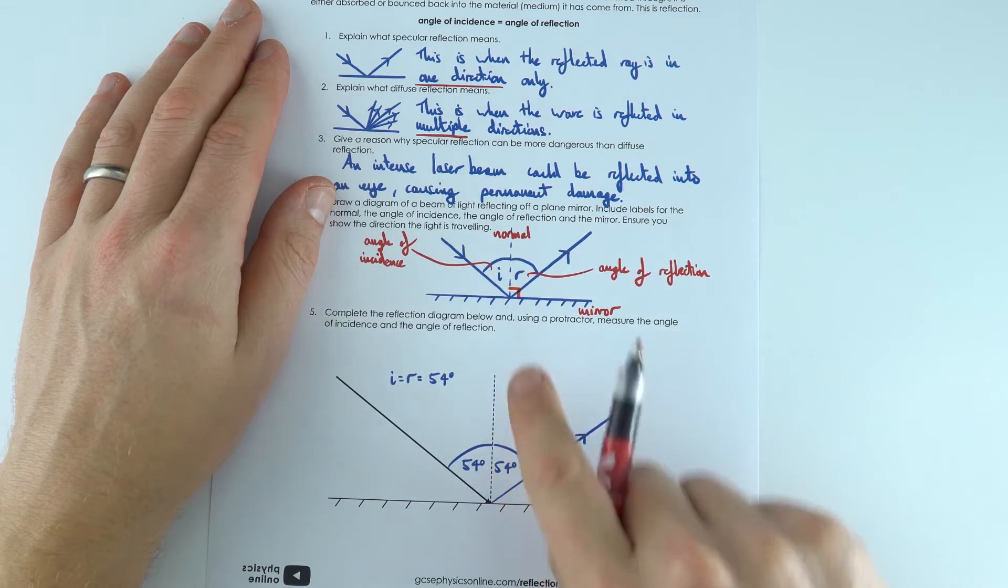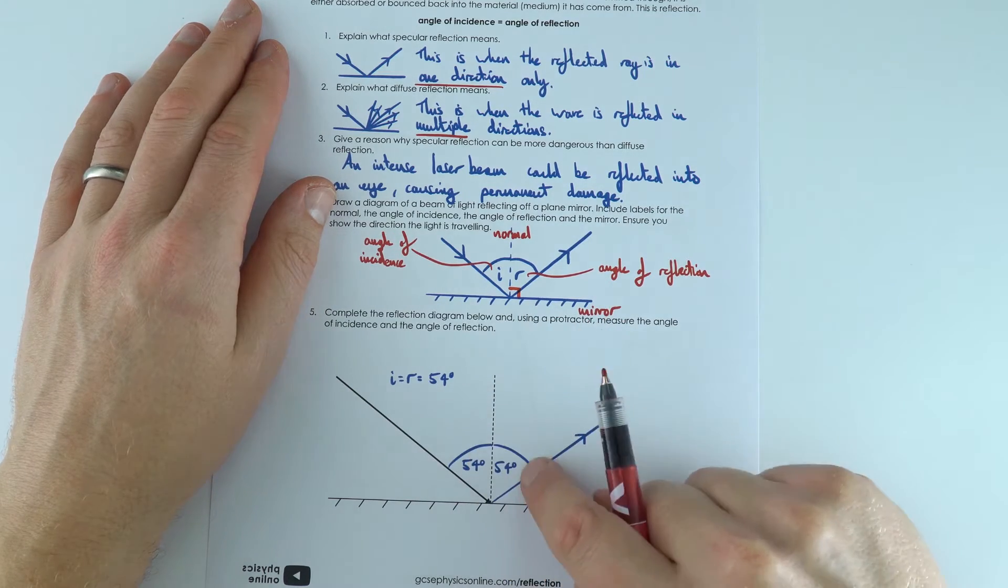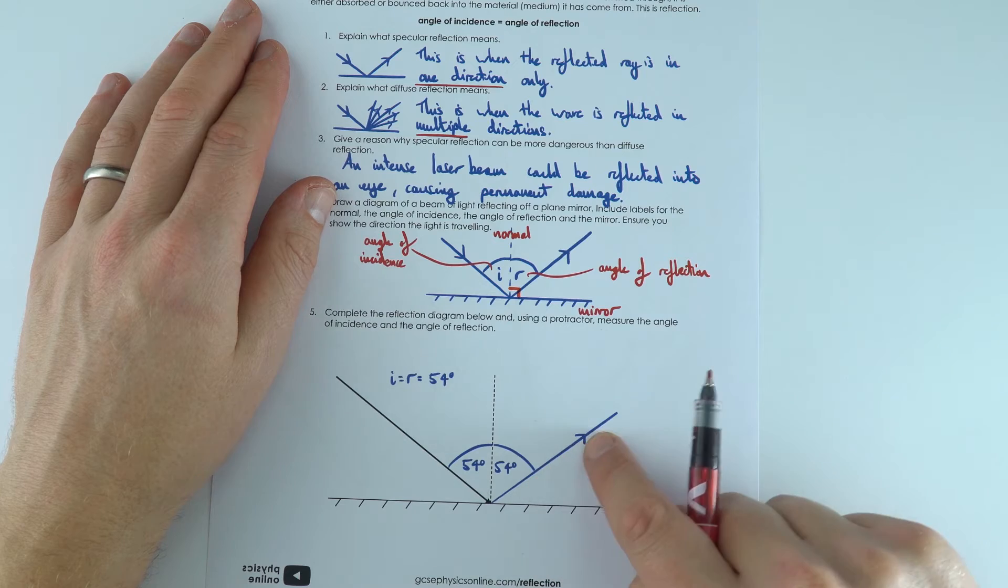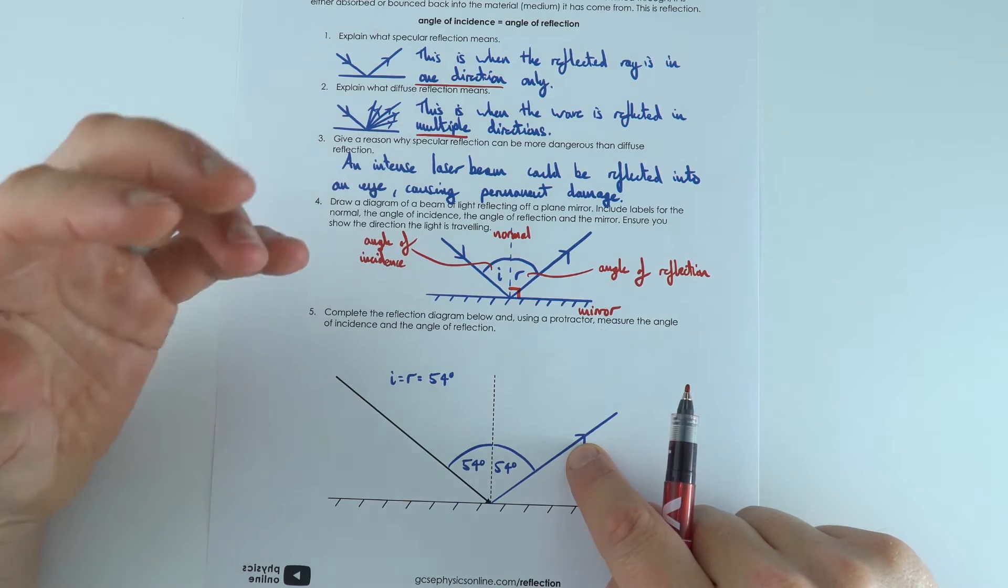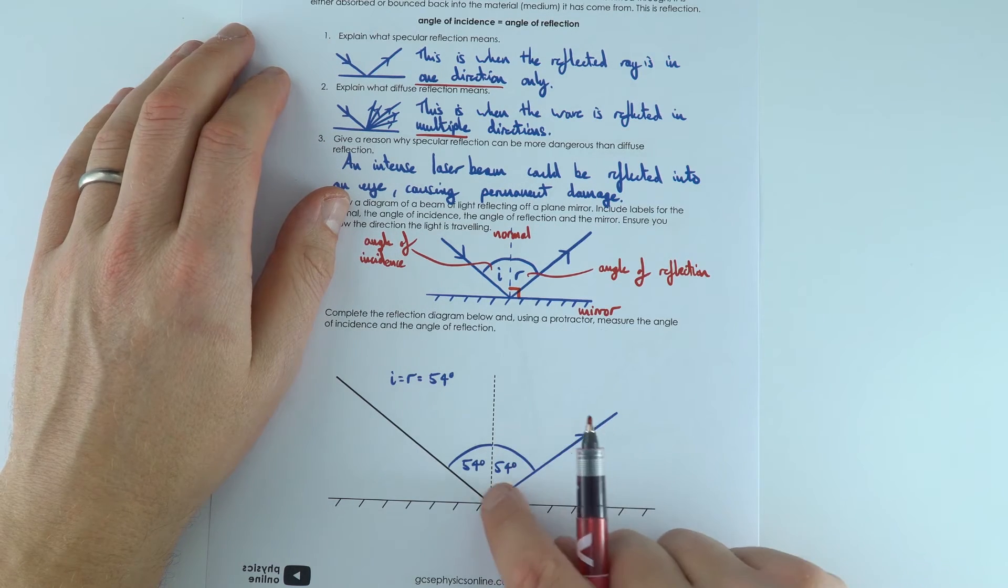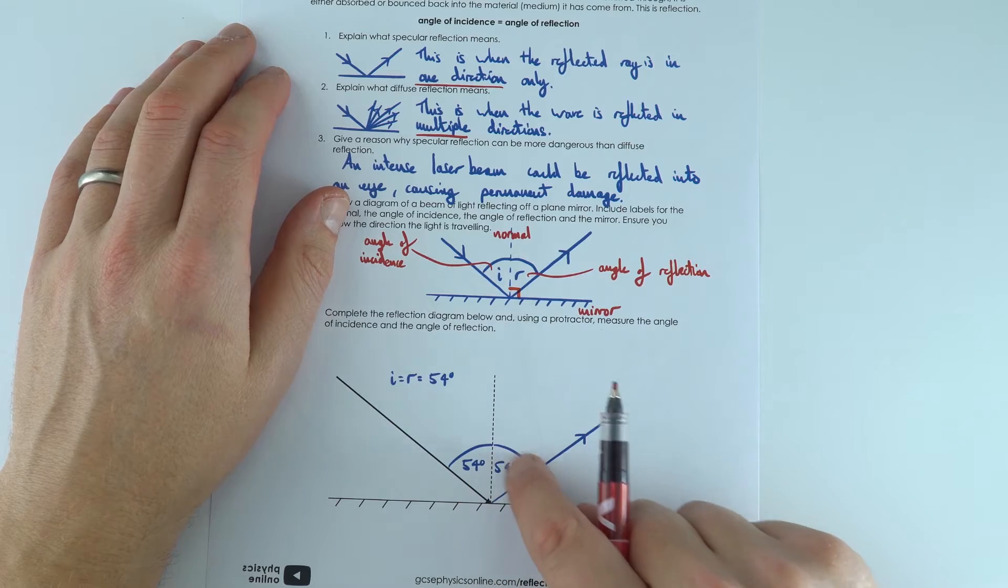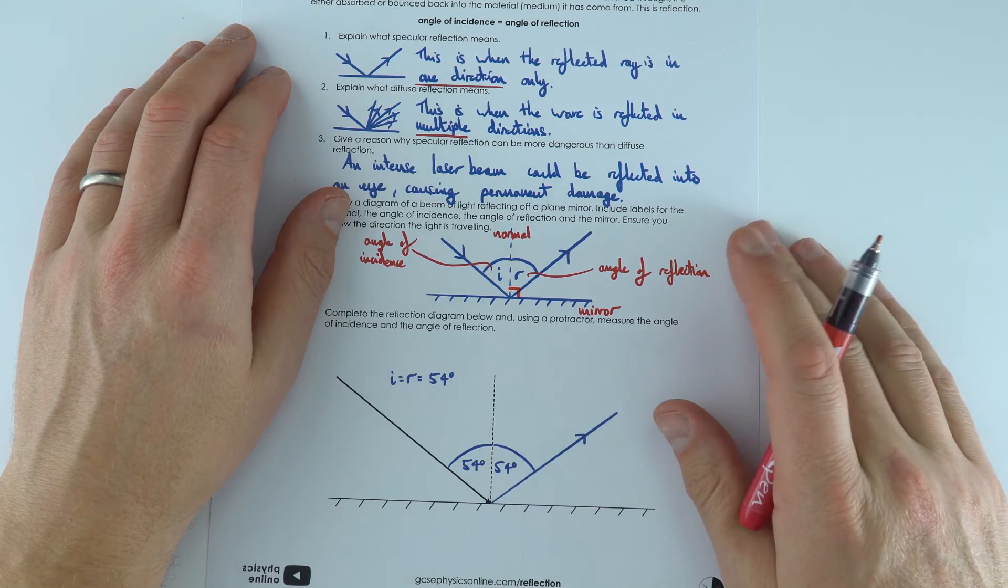For this one over here, I used a protractor and found the value is equal to 54 degrees. Then I sketched in this line here using a ruler, and obviously you should be using a pencil as well. That angle there, 54 degrees, you should measure out here as well. So these two angles are the same.